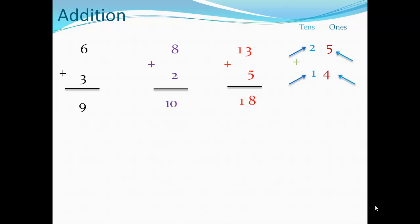So the answer — how to solve this problem: ones plus ones, get the answer in the ones place; next, tens plus tens, get the answer in the tens place. Five plus four equals nine; two plus one equals three.